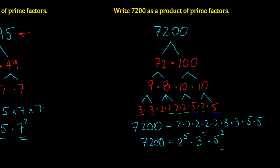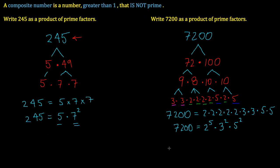So 7,200 is built from five 2s multiplied together, two 3s multiplied together, and two 5s multiplied together — all as a product. You really only have three types of prime factors here: a 2, a 3, and a 5. As a side note, it's like taking a word like Canada, which is built from three As, one C, one N, and one D — much the same way 7,200 is built from a selection of prime factors. That's all there is to prime factorization and composite numbers.